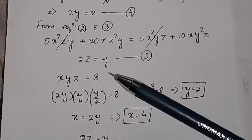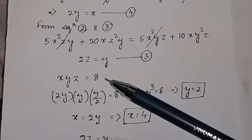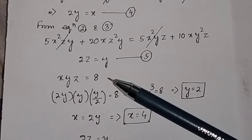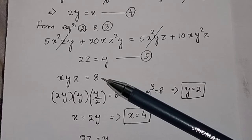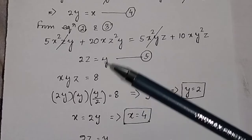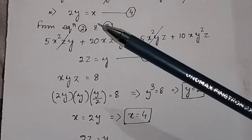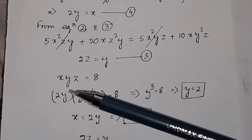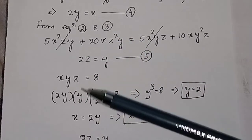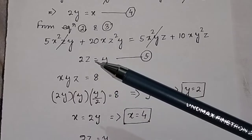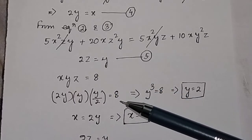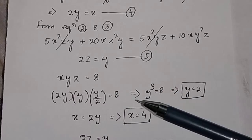Now substitute the values of x and z (in terms of y) into the constraint equation xyz equals 8. With x equals 2y and z equals y/2, substituting gives 2y times y times (y/2) equals 8, which simplifies to y cubed equals 8, so y equals 2.